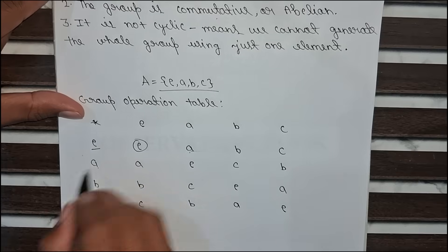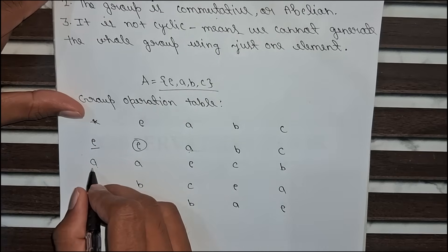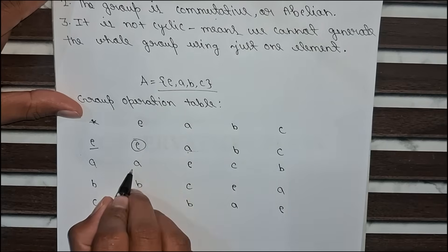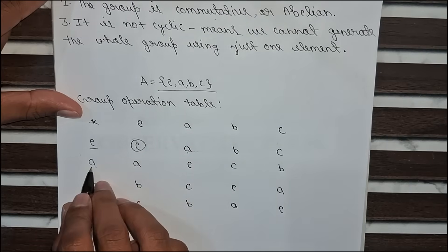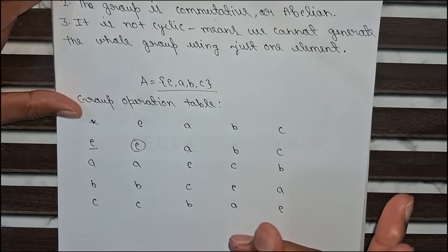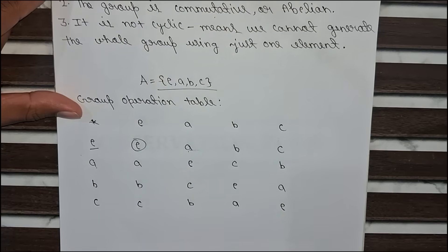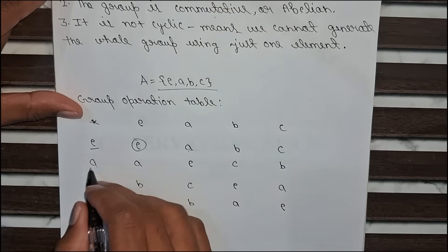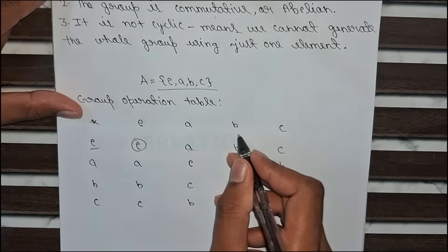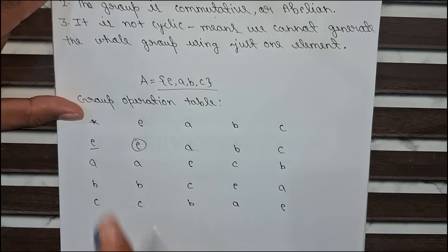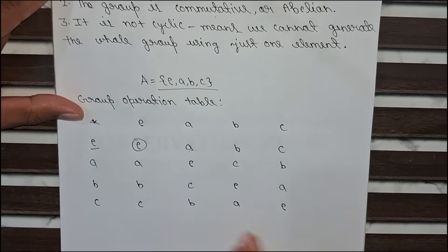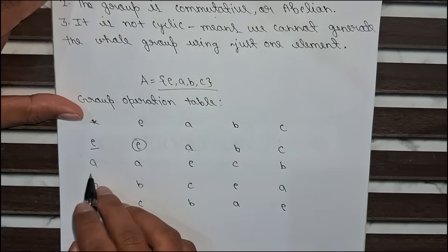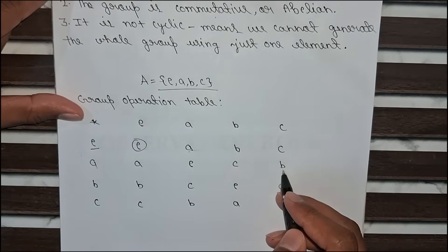Now the second column: a × e, multiplying by the identity element gives the same value, so a × e = a. Now a × a: by the first rule, every element should have its own inverse, so a × a = e. Then a × b gives the third element c, and a × c gives the element b.